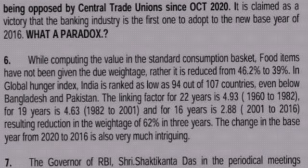This change in base year from 1960 to 2016, being opposed by central trade unions since October 2020, is claimed as a victory, with banking being the first industry to adopt the new base year of 2016. However, in computing the standard consumption basket, food items have not been given due weightage — reduced from 46.2% to 39%. In the Global Hunger Index, India is ranked 94 out of 107 countries, even below Bangladesh and Pakistan. The linking factors are: 4.93 for 22 years (1960–1982), 4.63 for 19 years (1982–2001), and 2.88 for 16 years (2001–2016), resulting in a 62% reduction in weightage over three years.